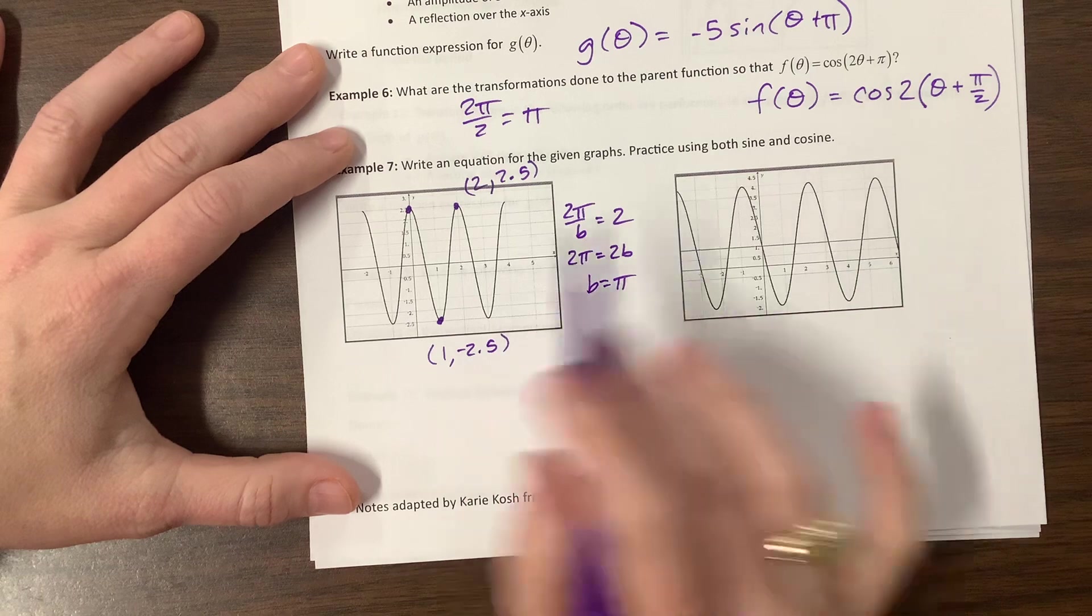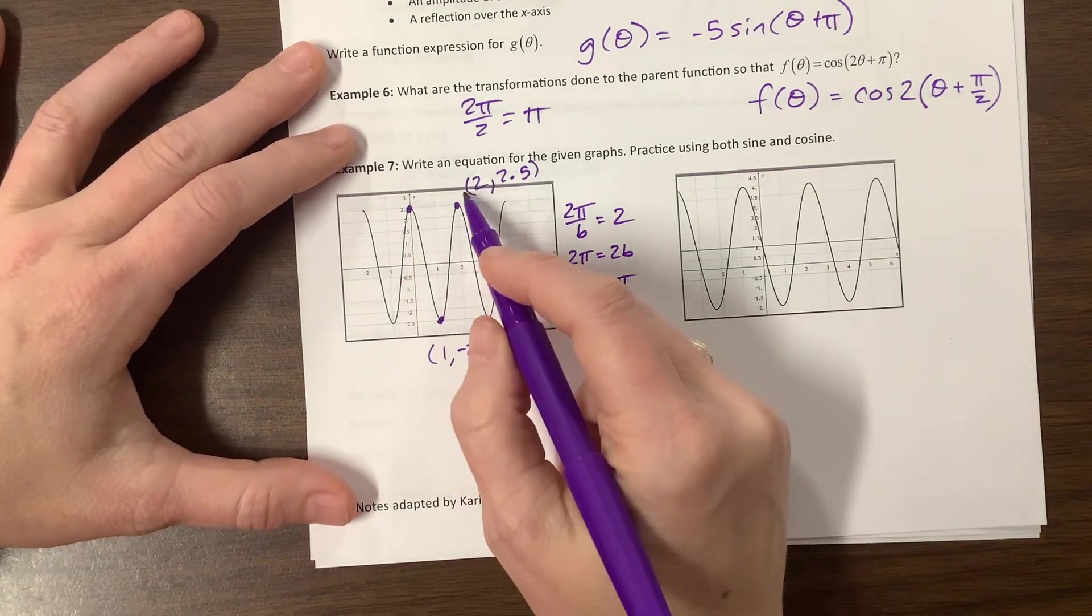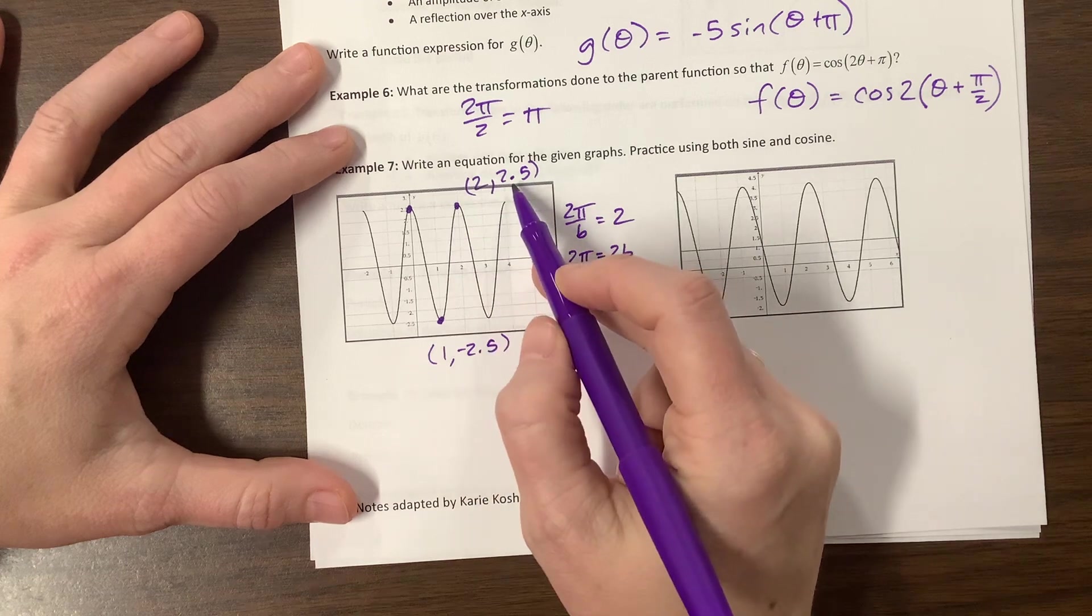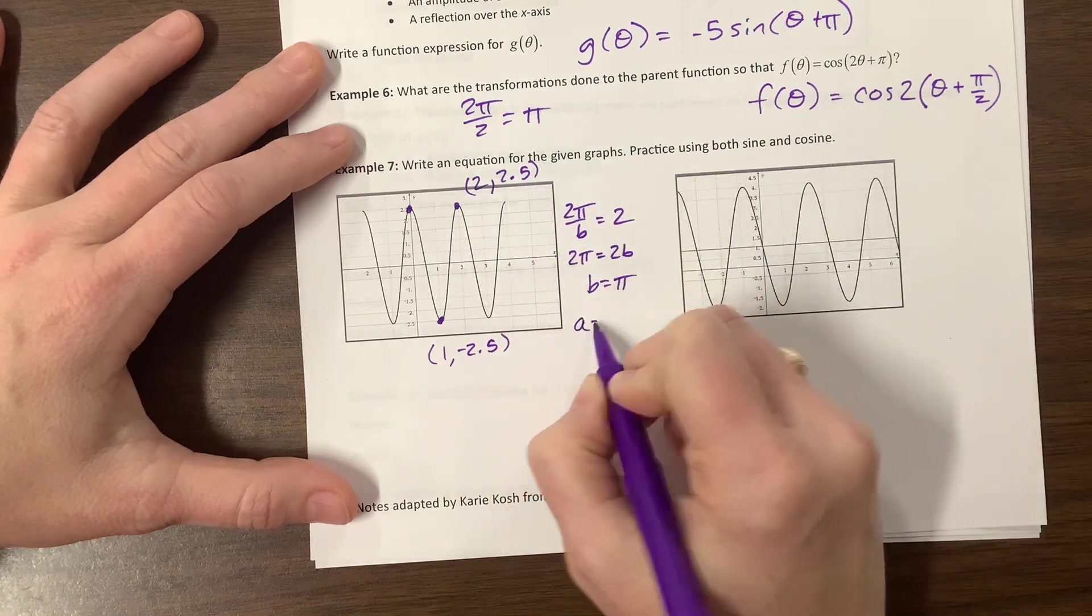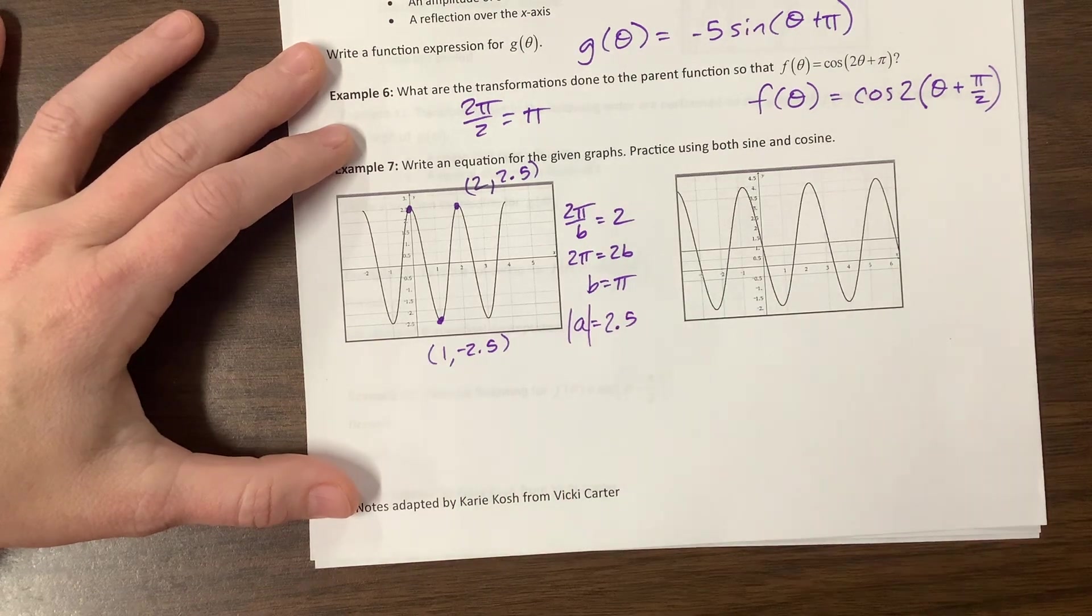Yes, b is equal to pi is what I meant to say, but it works the same way. And now my amplitude is 2.5. So I've gotten, so that's my a value is 2.5, or well, or we know that the absolute value of a is 2.5.